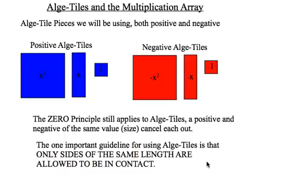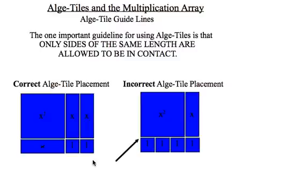The important guideline for working with algebra tiles is that only equal side lengths can be next to each other. So, if I wish to have an x term beside an x squared term, that would be acceptable because they have the same side length.